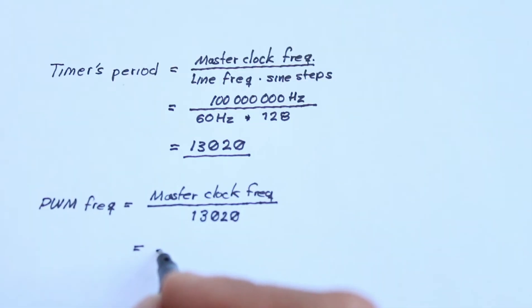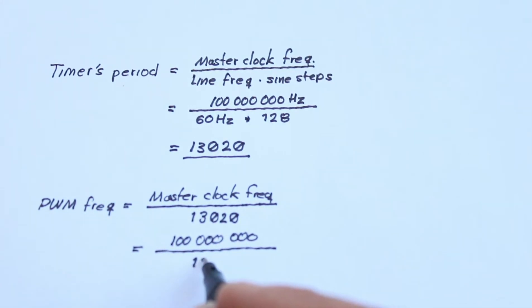So, I need 14 bits to count from 0 until this value. Besides, by using this value as the maximum duty cycle, the PWM frequency would be computed as follows. The PWM frequency equals the master clock frequency over 13,020. This is around 7.68 kHz,